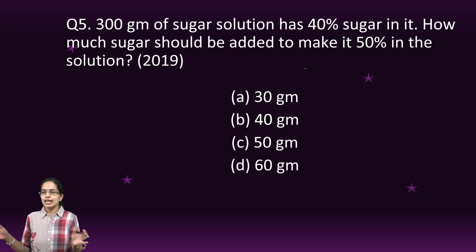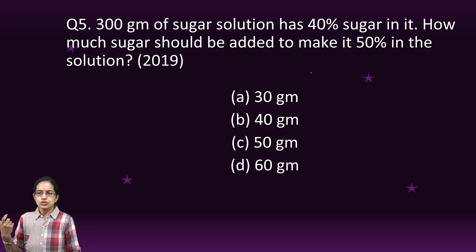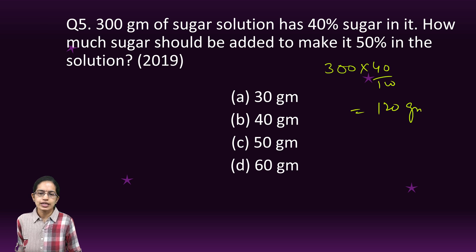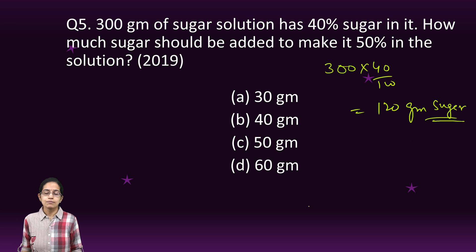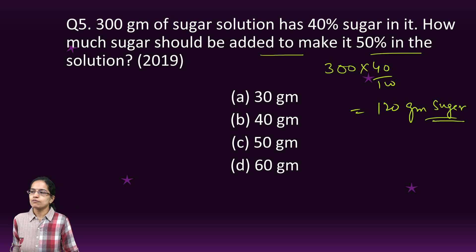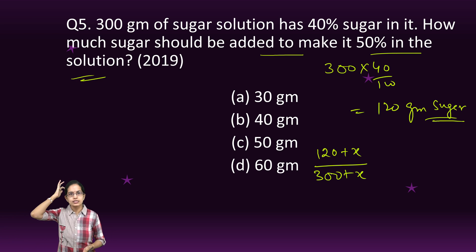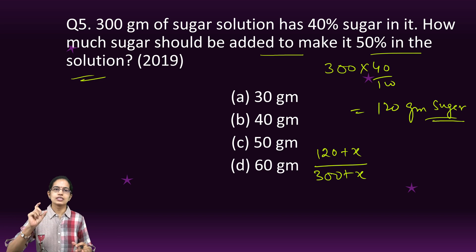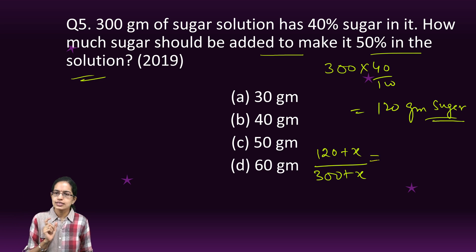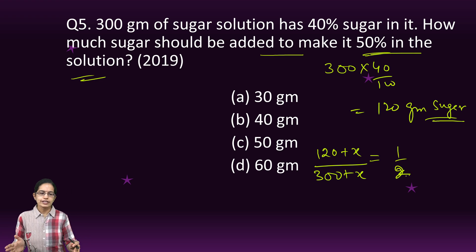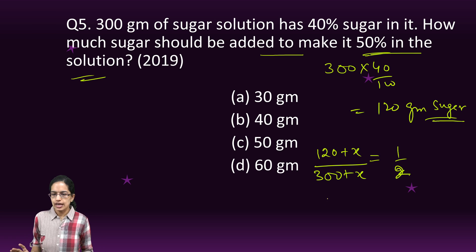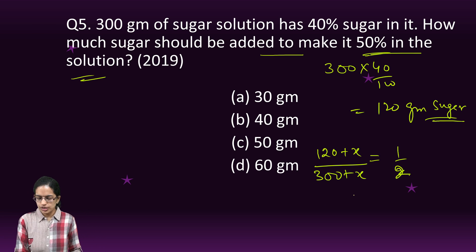The next question: 300 grams of sugar solution has 40% sugar, so 40% of 300 = 120 grams of sugar is present. How much sugar should be added to make it 50% of the solution? Set up (120 + x) / (300 + x) = 1/2, since both the sugar and total solution increase. Solve for x to get the answer.